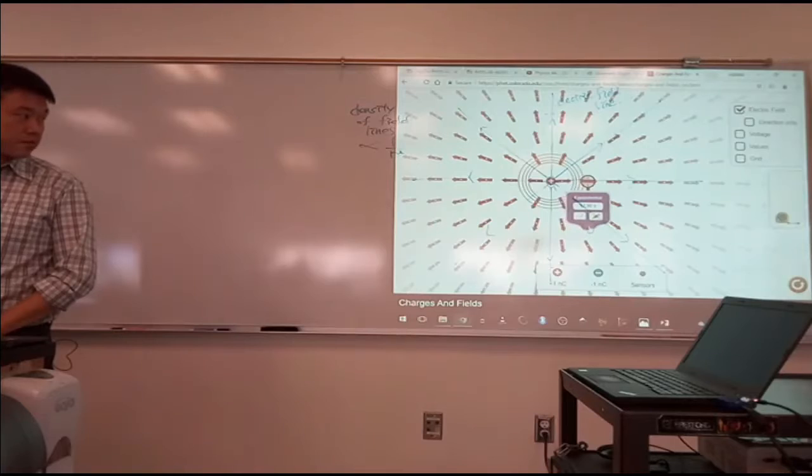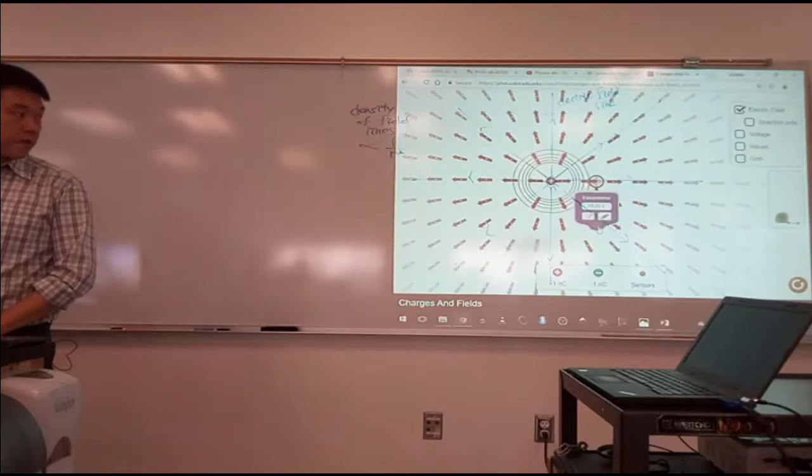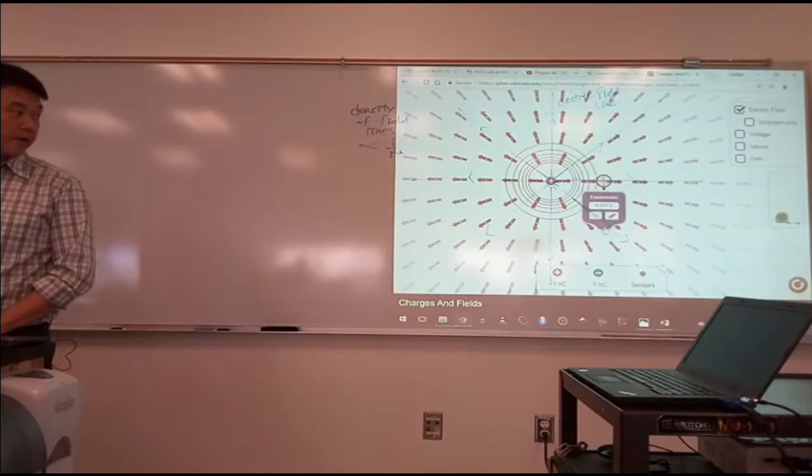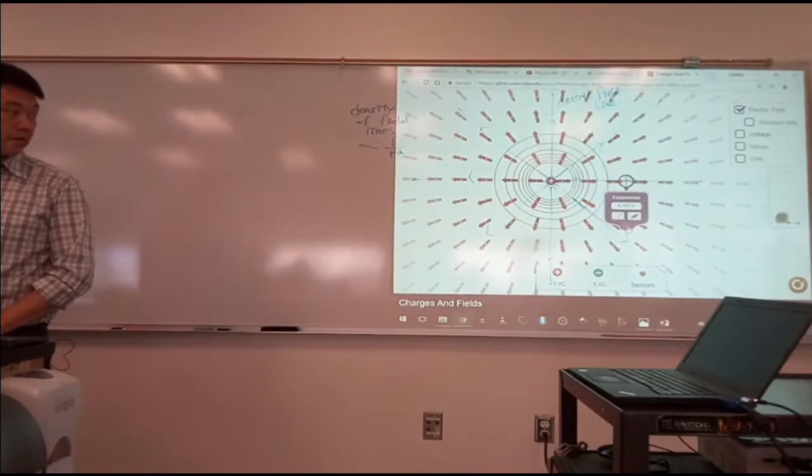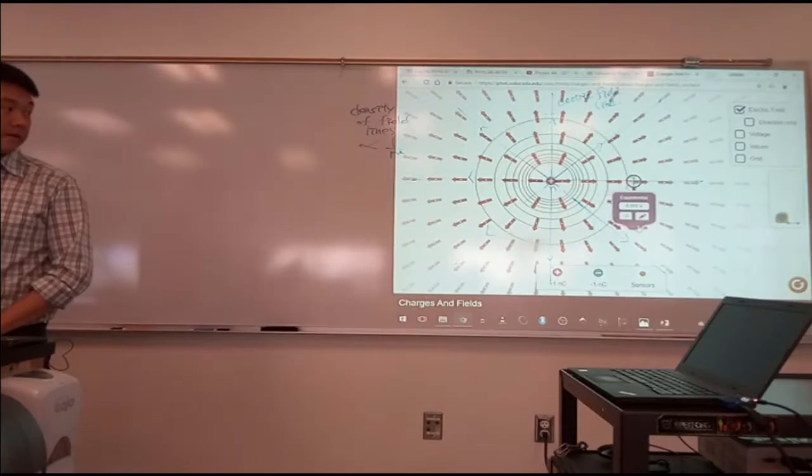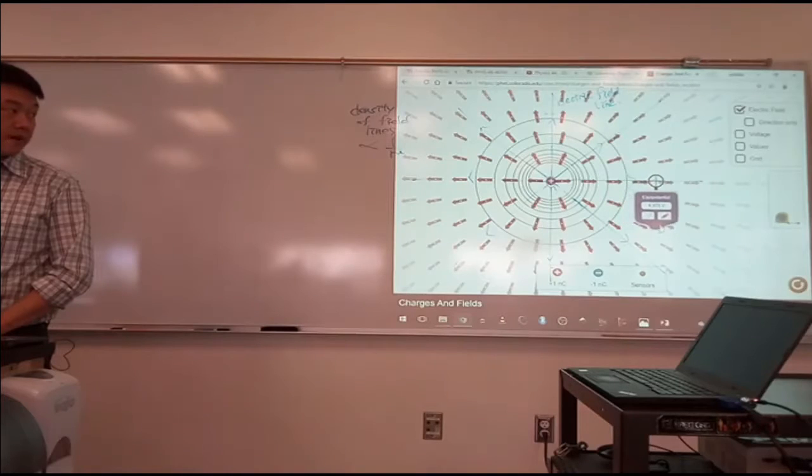And as I draw this, there are two questions I want you to think about. One, what do you think these circles represent? That's the first question. Two, if you wanted to use equipotentials to figure out electric field strength, how would you do it? It's going to take me a while to finish drawing, but those are the two questions I want you to think about. What do these circles represent and if you want to get electric field strength from these lines, how would you get it?